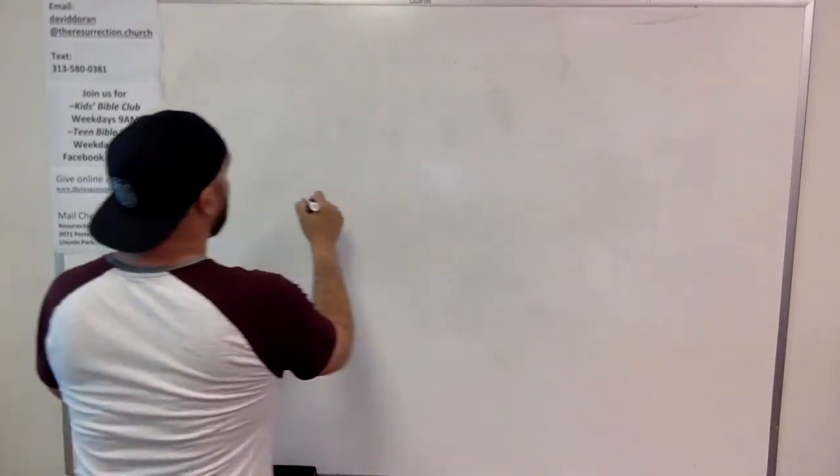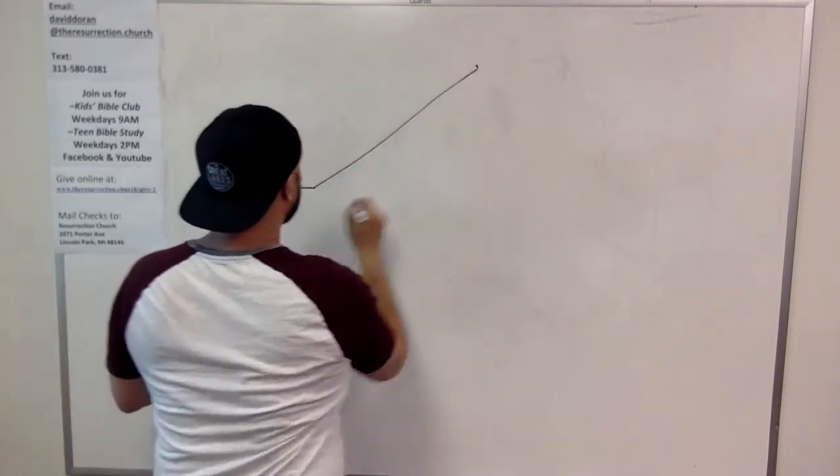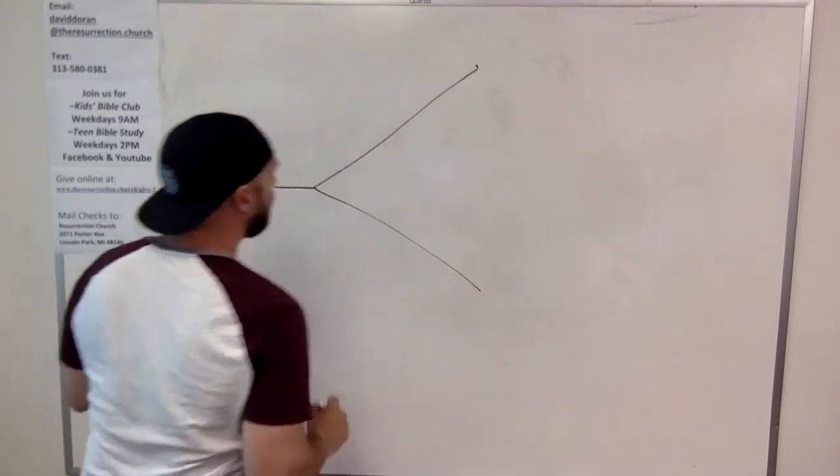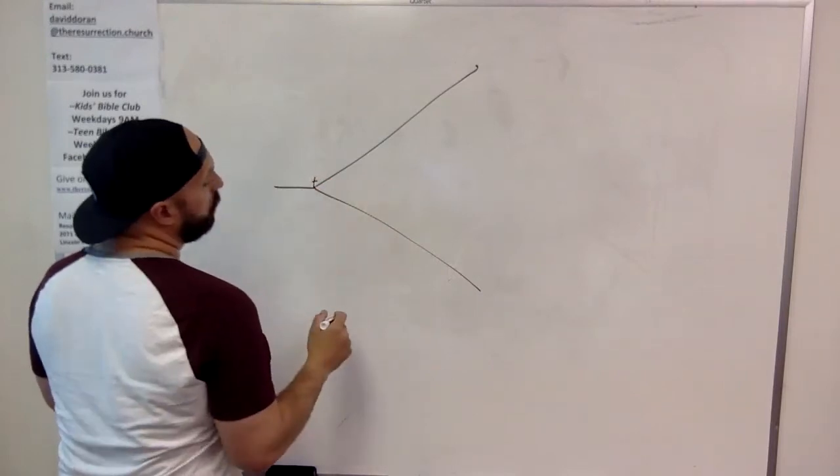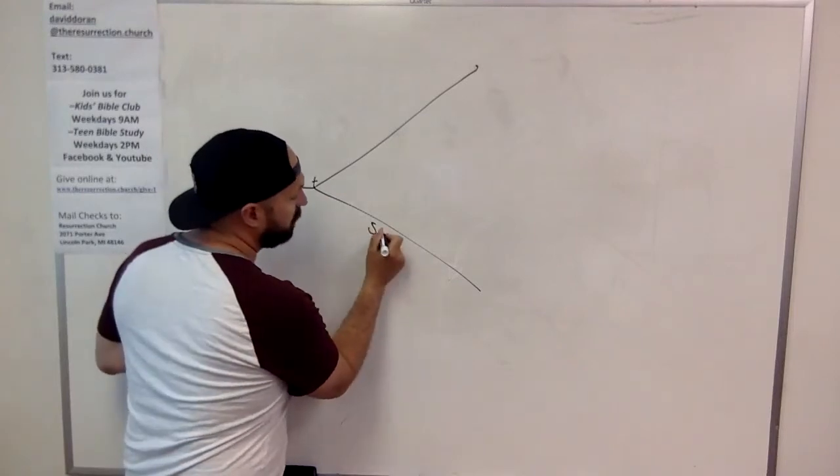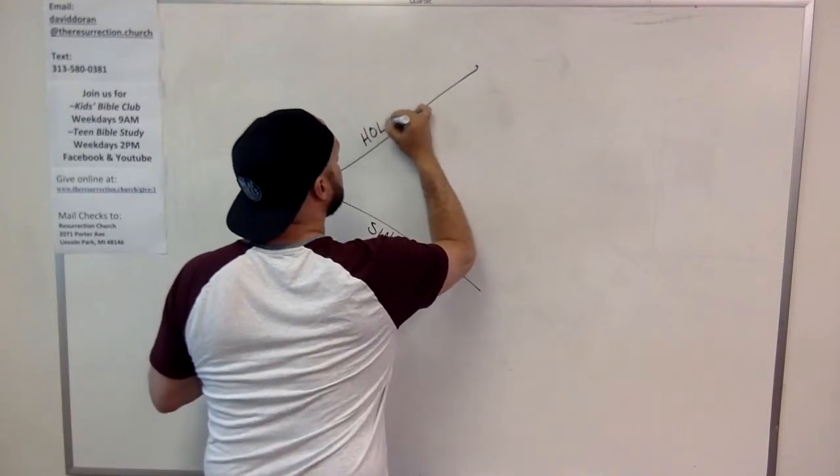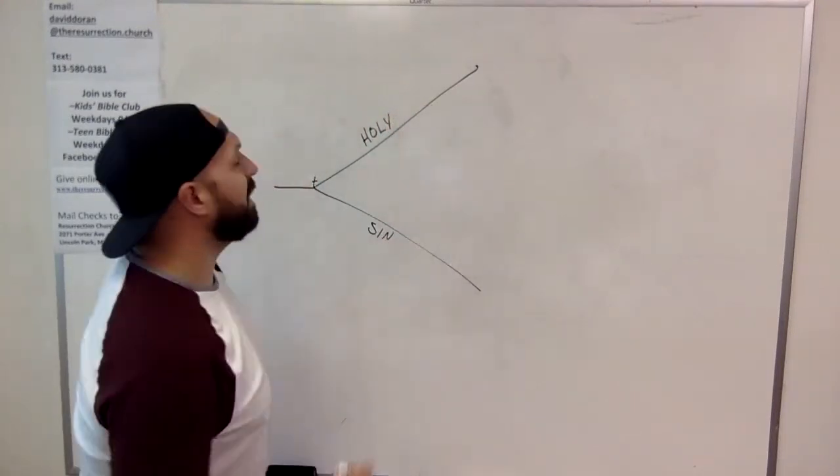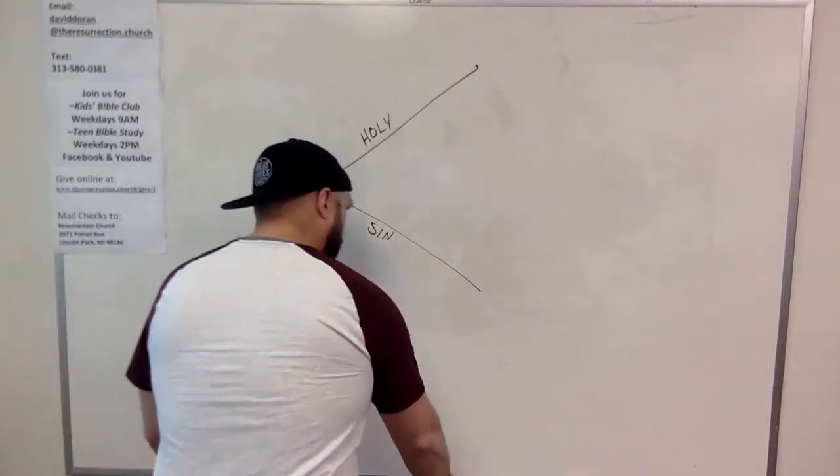Now this is where, okay, we've talked about the legalism and license paradigm where sometimes we try, you know, we become a Christian here and over the course of our lives, we might try to take this line, which is sinfulness and God's holiness, right? Holy and sin. And we might try to lower the line, right? So I'm gonna draw it in a different color right now.